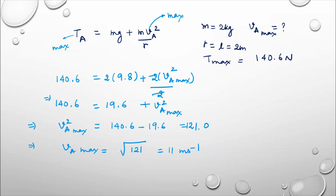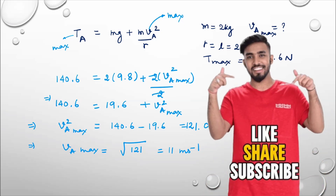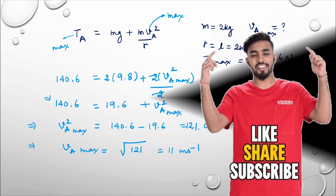So the answer is 11 meters per second. What we learned from this video: in vertical circular motion, the bottom-most point experiences maximum tension. If you are designing any body to undergo vertical circular motion, you must make it strong enough to withstand that maximum tension at the bottom. I hope you liked the video — please share it with your friends and family. We will meet in the next video. Thanks for watching.